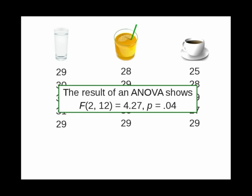The calculations show that the ratio is 4.27, which has a probability of .04. So in this case, you can reject the null hypothesis. With these numbers, the drink you give the people does have an effect on their reaction time.